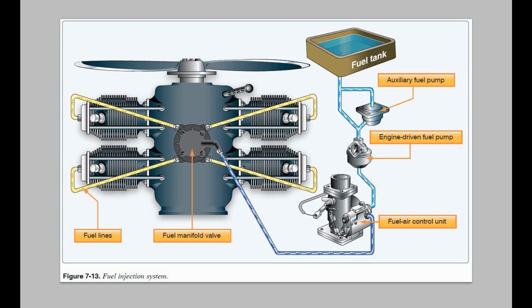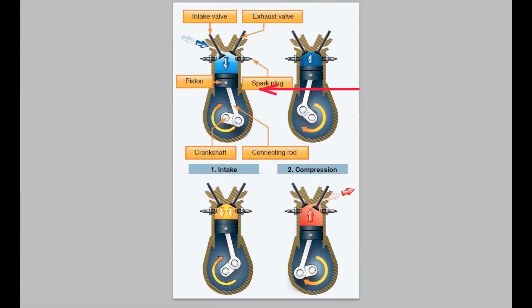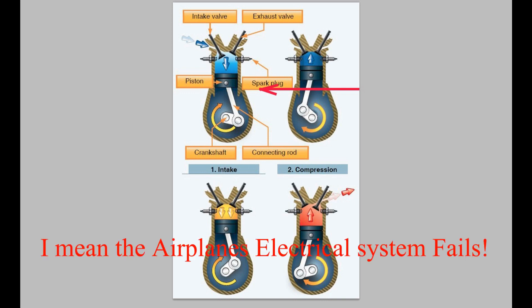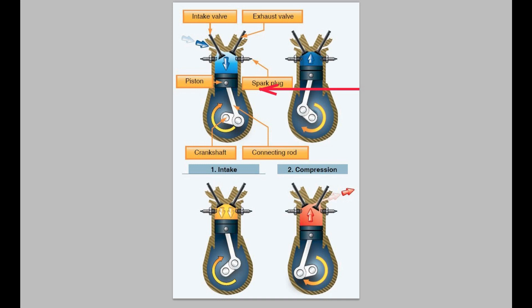Let's look at the engine on a Cessna 172 — a four-cylinder carbureted engine. Unlike a car engine, aircraft have two spark plugs per cylinder and use a magneto to fire them. This is for safety: if one plug fails you still have a spark, and the magneto doesn't rely on the airplane's electrical system, so if that fails the engine keeps running. The Cessna 172 has a four-cylinder, four-cycle engine.